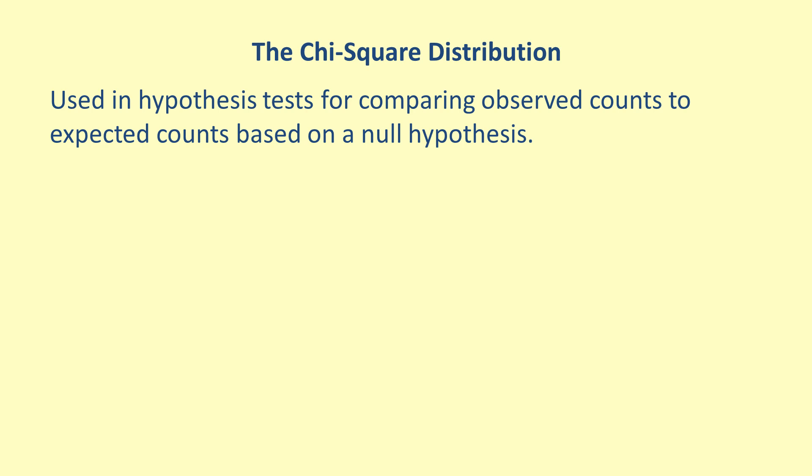The chi-square distribution is useful for testing some hypotheses that compare observed counts for categorical data to expected counts based on a null hypothesis. The test of independence can be used to determine if two categorical variables are independent.